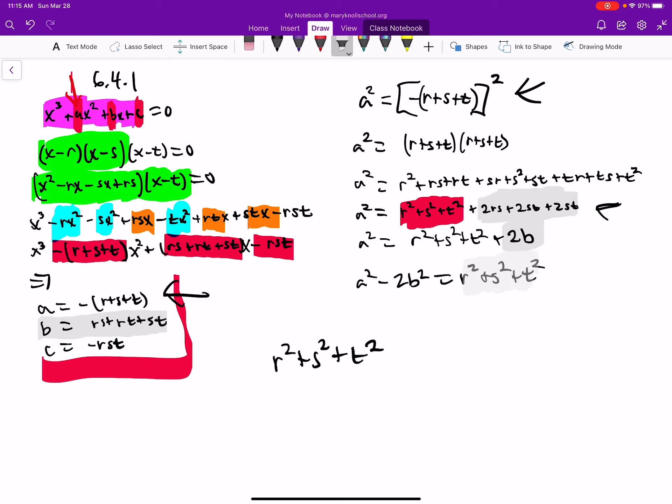We have r squared plus s squared plus t squared. Well, that's going to be a squared minus 2b. And there we go. That's the answer. And it agrees with the back of the book, too.